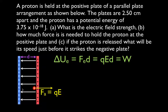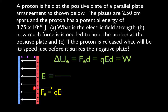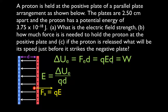This is the set of equations we talked about in the previous video. We're going to first figure out the electric field strength. We've been given the amount of potential energy, we know the charge on a proton, and we know the separation distance. So we'll use the relationship between change in potential energy and QEd. The electric field strength equals the change in potential energy divided by the charge times the distance between the plates.